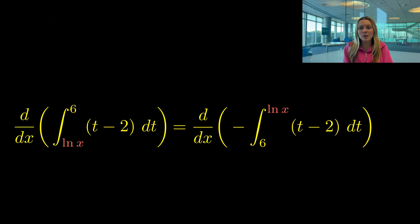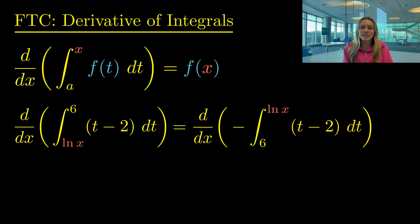Since our variable is now in the upper limit, we can use FTC and plug ln(x) into our integrand of t minus 2. So our derivative starts with our minus sign from our previous flip, and we plug ln(x) into t minus 2. But like in our last example, we have to use the chain rule.